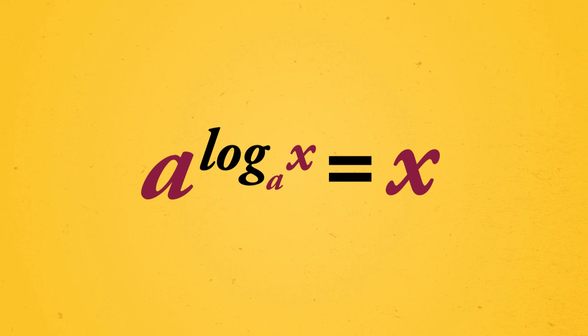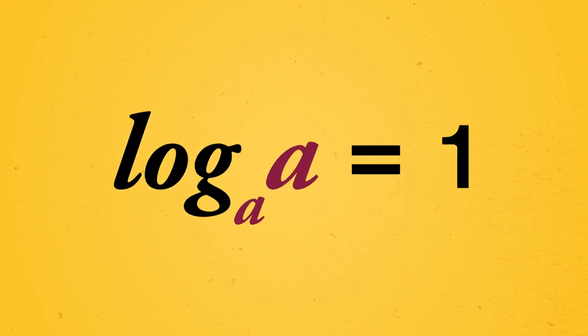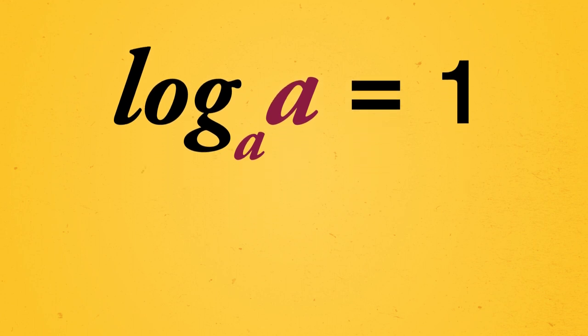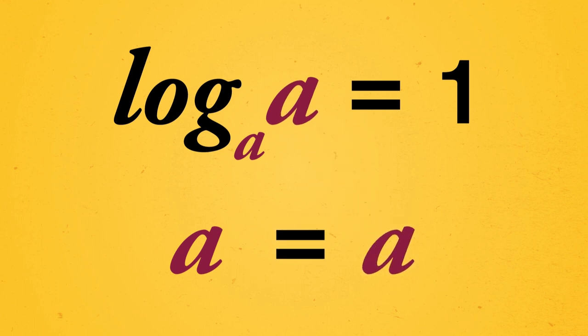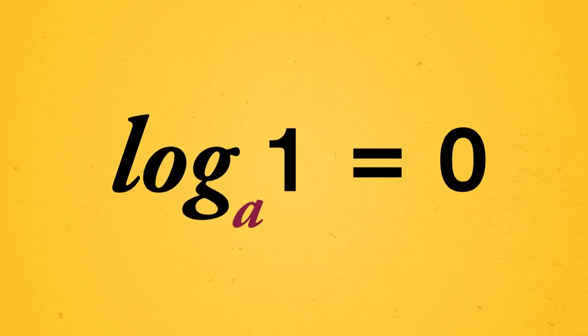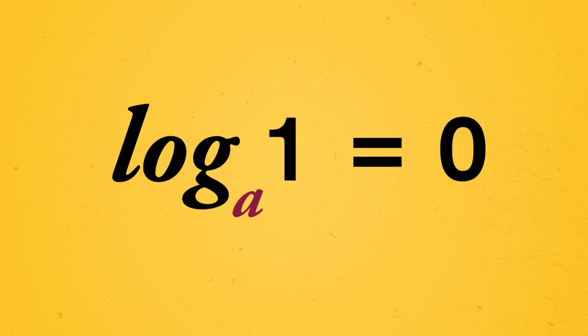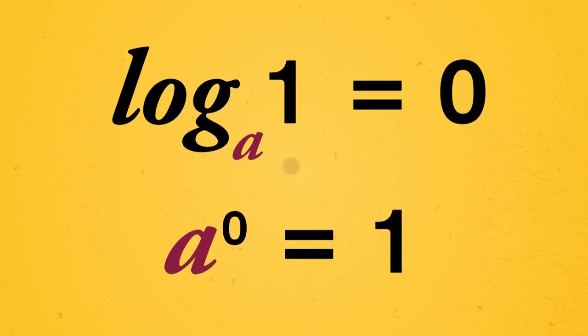And to round out our important logarithm properties, notice two things. Log base a of a equals 1 for all values a. Because this logarithm is really just asking what power of a gives the answer a, and that power is 1. a to the 1 is a. And similarly, log base a of 1 equals 0 for all values a, because anything raised to the power of 0 is 1.